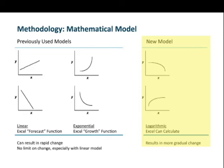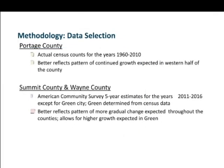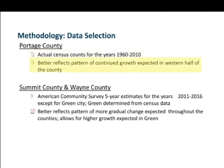Using the more gradual change I think is going to show some more realistic numbers in our forecasting. Moving on to the data selection, we tried running the logarithmic regression curves using two sets of data, and we found that we got better results for Portage County using one set of data and different results using a different set for Summit and Wayne counties. For Portage County, we're running the estimation using actual census data counts for the years 1960 to 2010 — six data points over those 10-year intervals — which seemed better to reflect the pattern of continued growth expected, particularly in the western half of Portage County.